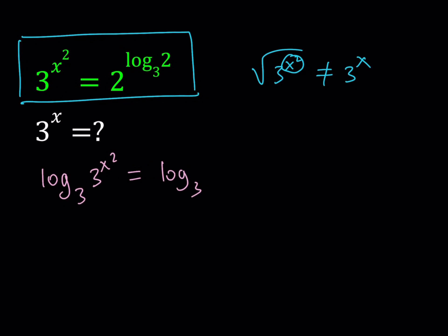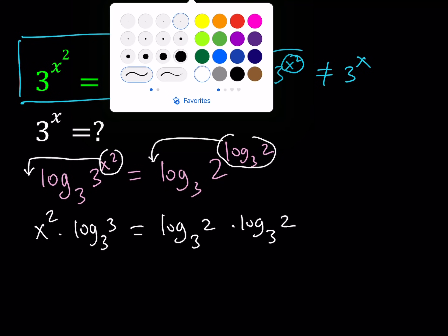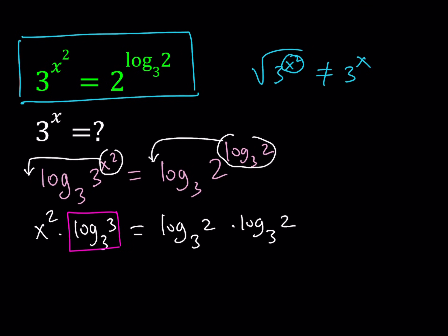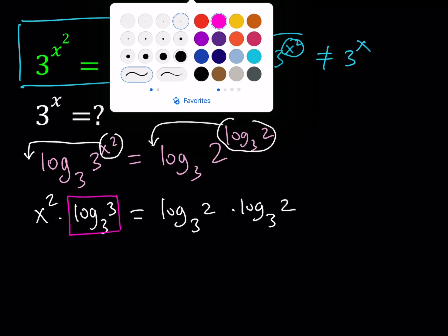Then we're going to use the properties of logarithms. You have a power, you can move it to the front. This gives us x squared times log 3 of 3. The other one gives us log 3 of 2 times log 3 of 2. So notice that on the right-hand side, we're getting the same thing twice, so when we multiply something by itself we get that squared. On the left-hand side, we're getting log 3 of 3, which is 1, so we can totally ignore this part and write it as x squared.